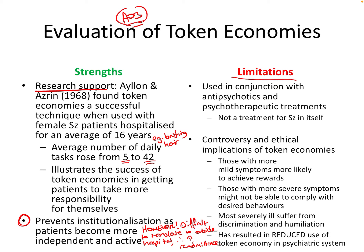Token economies are used in conjunction with antipsychotics and other psychotherapeutic treatments like CBT. They are not themselves a treatment for schizophrenia, which isn't necessarily a limitation since they aren't trying to be. You could construct a useful compare-and-contrast argument looking at the effectiveness of token economies versus drug treatments — for example, noting that token economies have no side effects.